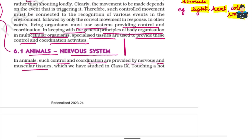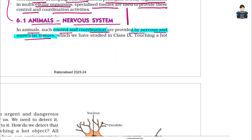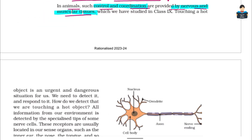In animals, control and coordination are provided by nervous and muscular tissues. When we touch a hot object, it is an urgent and dangerous situation for us. We need to detect and respond to it. This is what we have done in the 9th standard — how do we detect and respond?